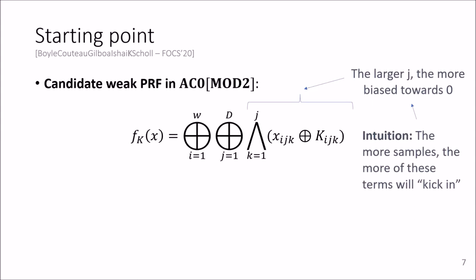And the intuition behind this construction, very roughly, is that the more samples one sees, the more of these terms will kick in, meaning that given very few samples, these are indistinguishable from random because of the low degree, the low order AND terms. And the more samples are given out, the more noise by the higher degree terms will be added.